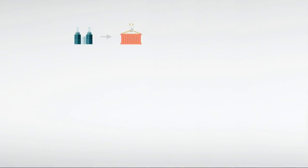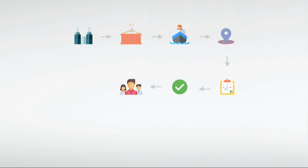A single product image requires extensive planning and execution that goes like this: you produce the product, you pack it up, you ship it across the ocean, you look for a shooting site, you work out a shooting plan, the executive team approves the plan, you assemble the shooting crew, you build up your scenes, and then you take your photographs. And this happens for every single photo that you see.